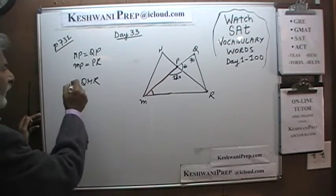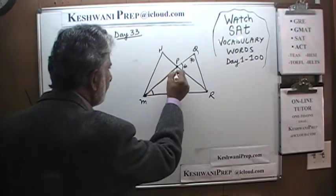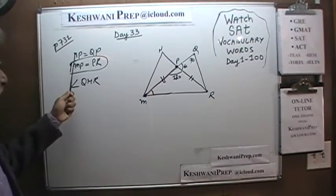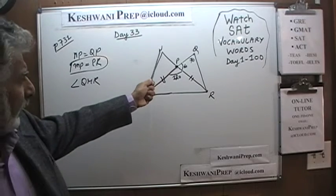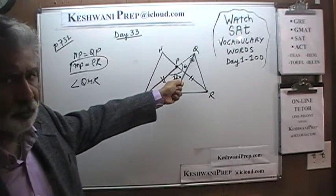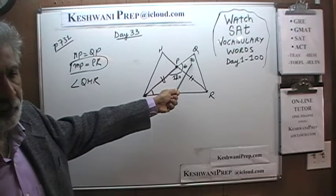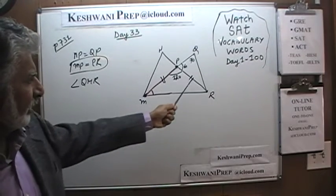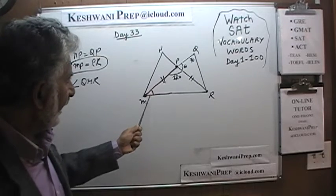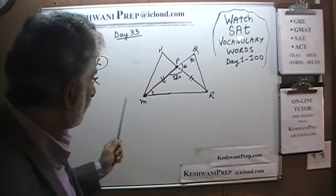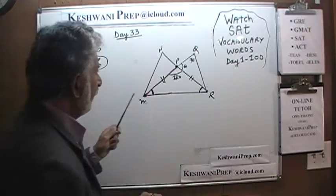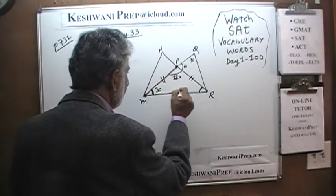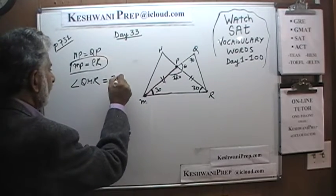We are further told that MP is equal to PR. The fact that they tell us NP is equal to PQ, and that this angle is 70, is completely irrelevant to us — it plays no role. So these two sides are equal, which means triangle MPR is an isosceles triangle. This means the angle we are looking for equals that angle. Since this angle is 120, the sum of these two has to be 60, and therefore each one of them is 30 degrees.